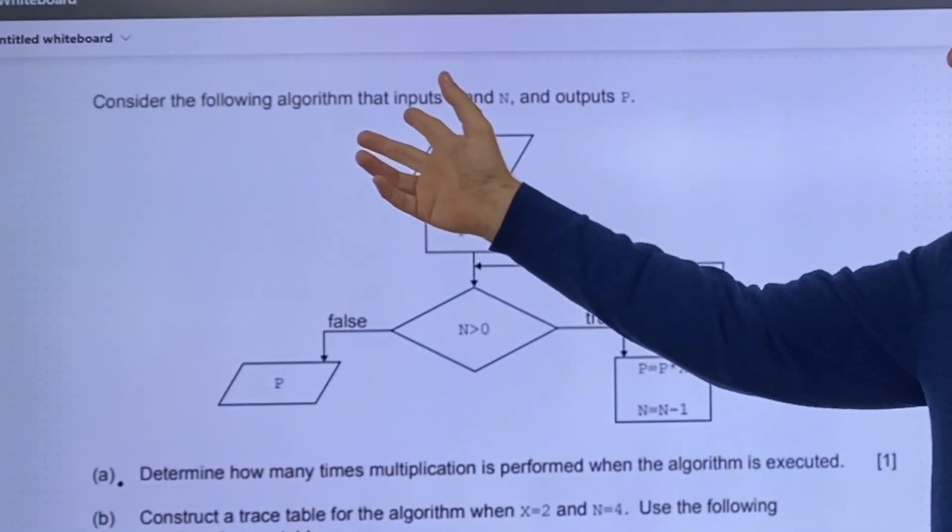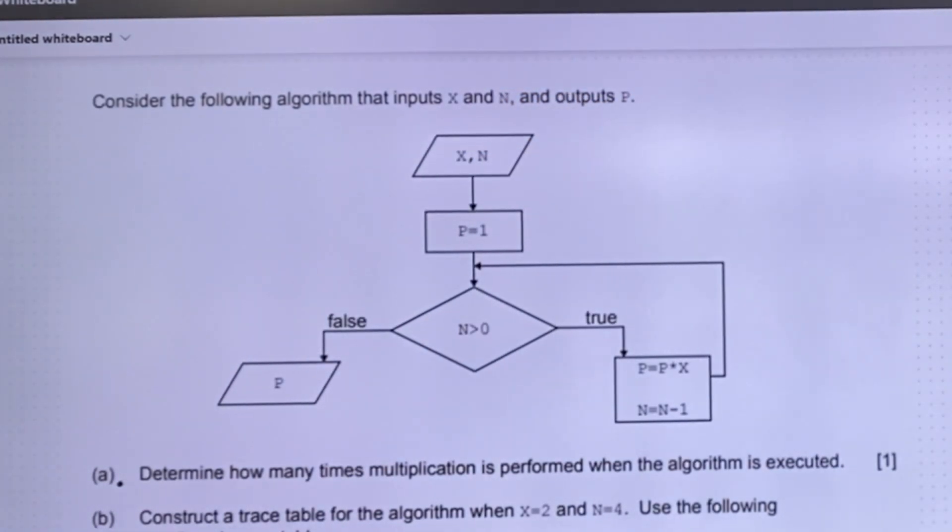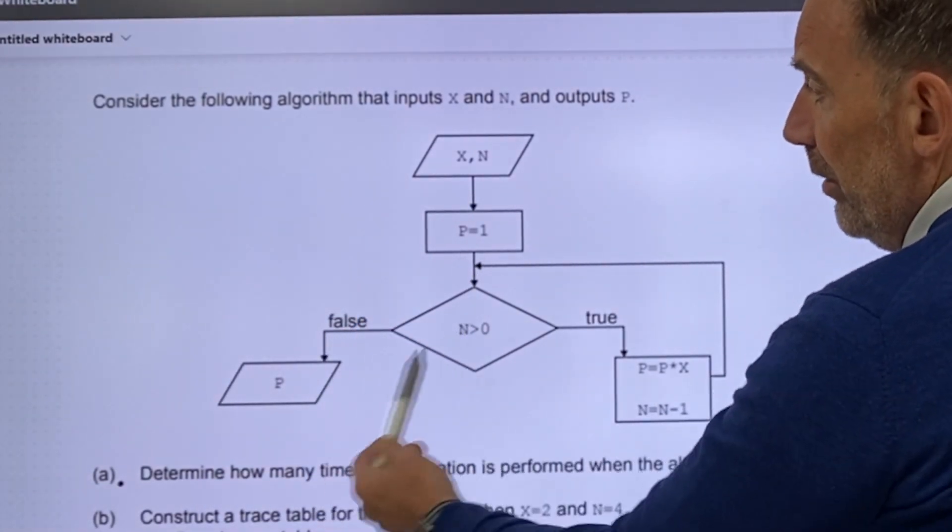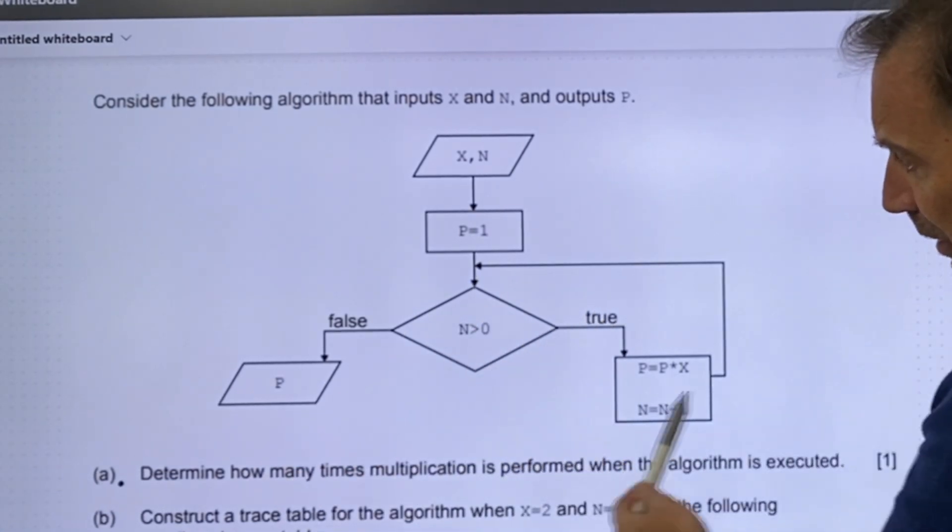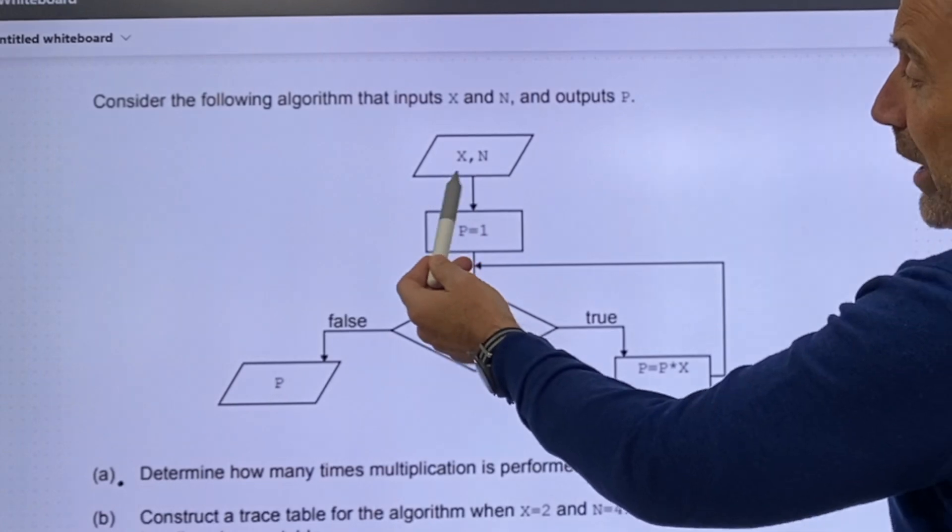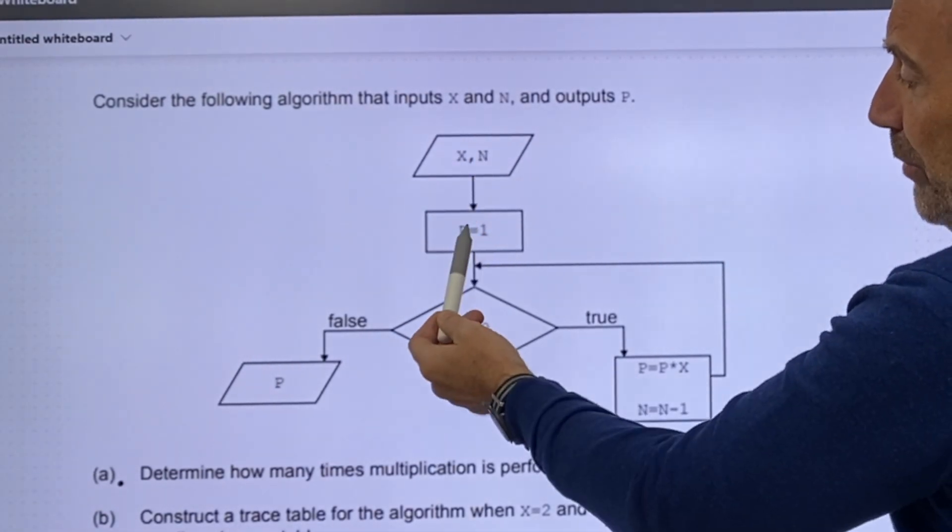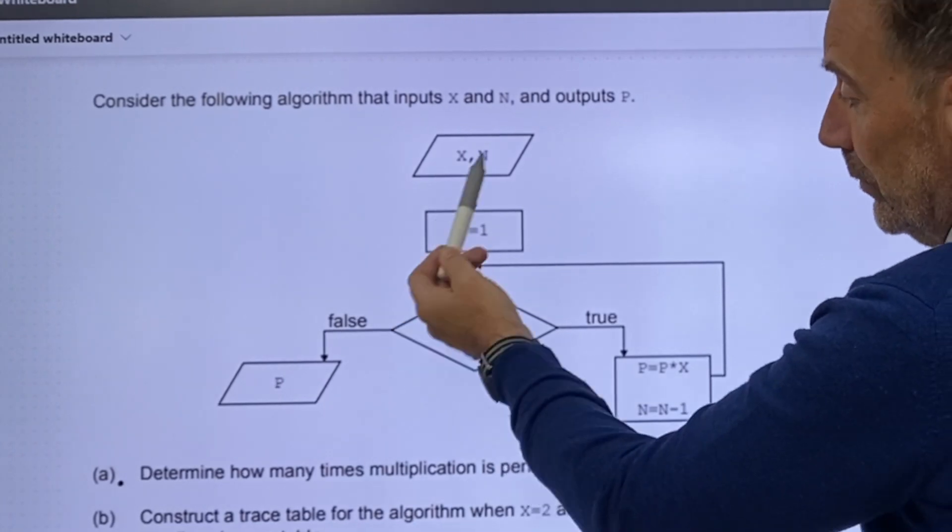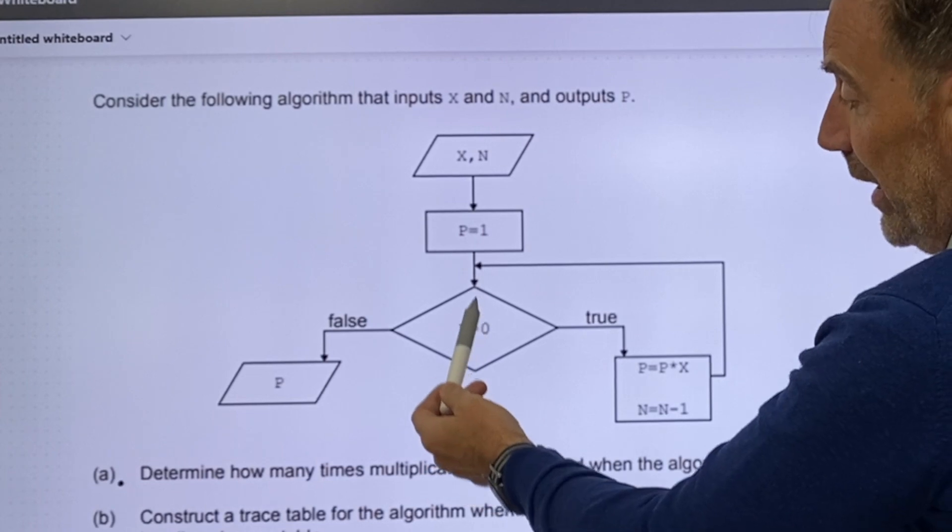Consider the following algorithm that inputs x and n and outputs p. So it's going to output p when whatever happens here becomes false. When it's true it's going to loop around something. So let's have a little look at this.